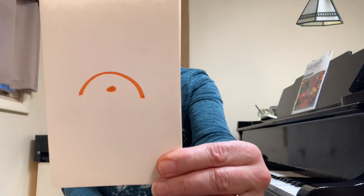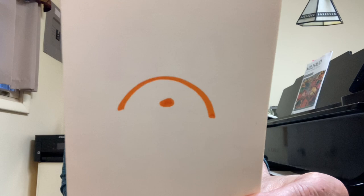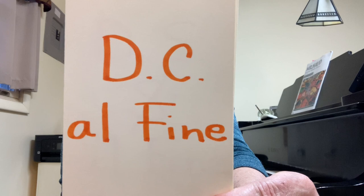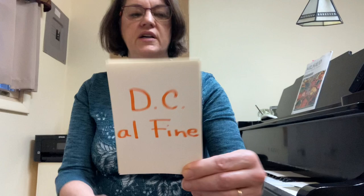Okay, here we go. I'm going to do this as one, two, three, four, fives again. You can either say the Italian name if you know it, or you can just say what the sign tells you to do. One, two, three, four, five. Fermata means hold the note longer than its written value. One, two, three, four, five. DC al fine — go back to the beginning and play until you see the word fine.